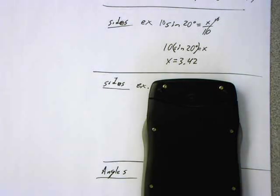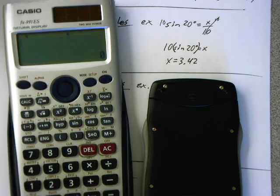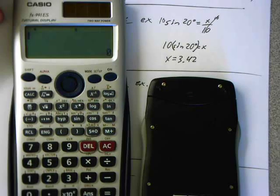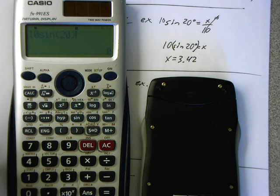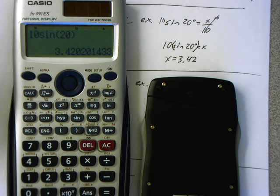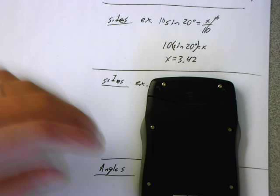Let's go to an easier calculator. Get one of these. You can just punch it in exactly as you see it. 10. Sine. 20. Equals. Bam. How much easier is that? A lot.